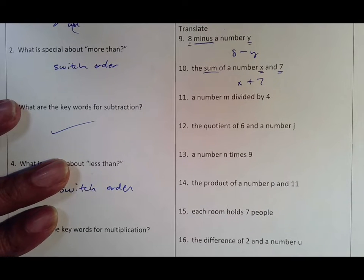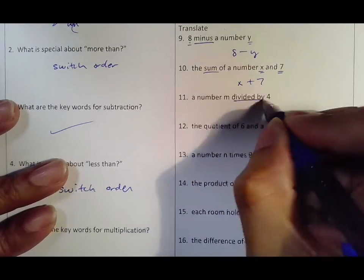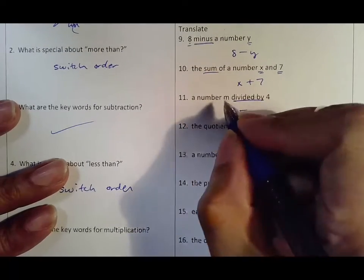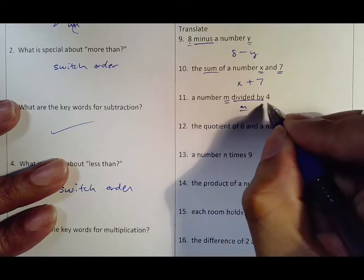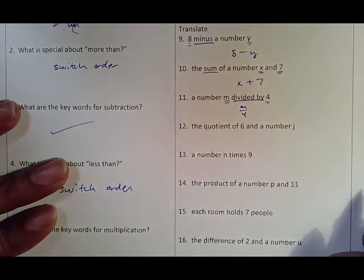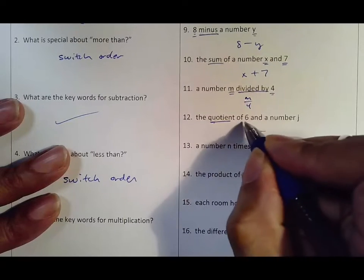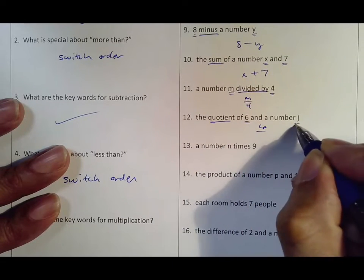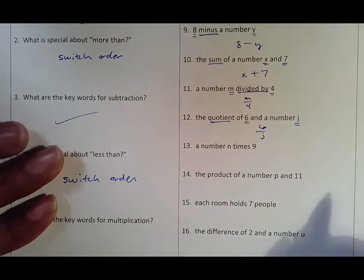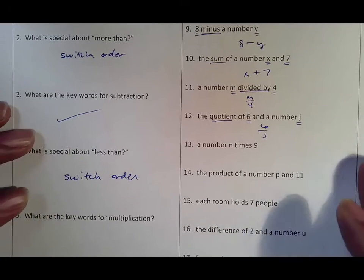Divided by means it's going to be a fraction. Remember that whatever is first goes on top, whatever is second goes on the bottom. Quotient again means divided by—whatever's first goes on top, whatever second goes on the bottom.